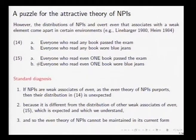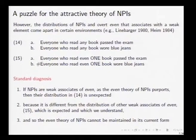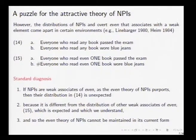These sentences come from Ladusaw's dissertation and are discussed by Irene Heim and many others. 'Everyone who read any book passed the exam' is okay, but also 'everyone who read any book wore blue jeans' — both sentences are acceptable in a downward entailing-like environment. However, we notice a contrast with 'even one' expressions: 'everyone who read even one book passed the exam' is okay, but 'everyone who read even one book wore blue jeans' is marked, unless you think hard about a connection between wearing jeans and reading books.